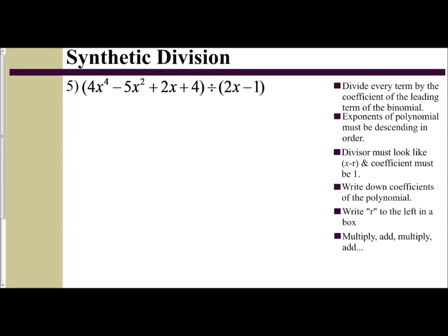In this video we're going to continue our examination of using synthetic division to divide a polynomial by a binomial. What you may notice in this example is we are now dividing by a binomial that does not have a leading coefficient of 1. We've learned in all of our previous examples that the divisor must have a leading coefficient of 1 in order to do synthetic division, so we have to create one. We do that by dividing by 2, dividing every term in both the binomial and the polynomial by 2 to keep it all balanced.